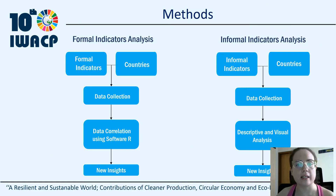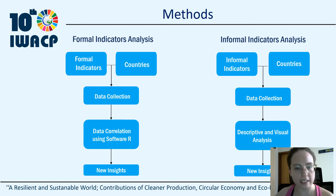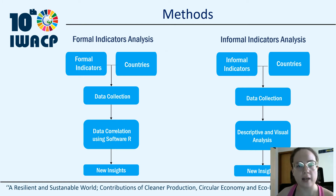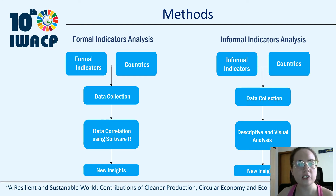For that, we have collected institutional and market indicators. In the analysis phase, for formal indicators, correlations were made with market and institutional indicators. For this, the R software was used, applying Pearson correlations with a significance level of alpha equals 0.05. For informal indicators, a descriptive and visual analysis was performed, because only informal institution data for a single year for each country was available.